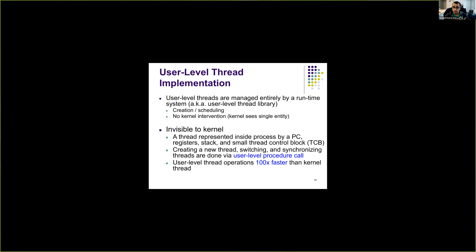Although the kernel could be completely unaware of different threads in the user process, user-level thread operations are actually much faster than kernel-level thread operations because no system calls are involved. All switching between threads happens in user space, with no boundary crossing between user space and kernel space, making operations very fast in the case of a user-level thread library.